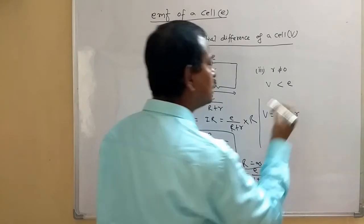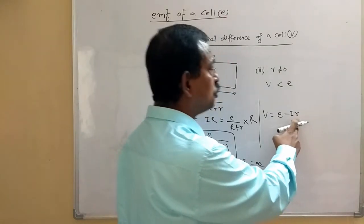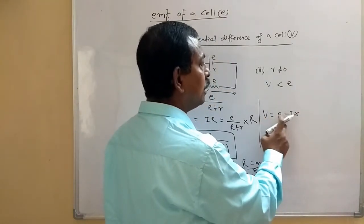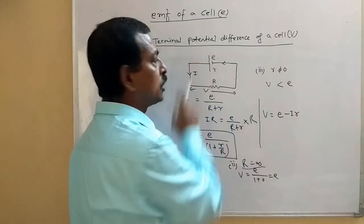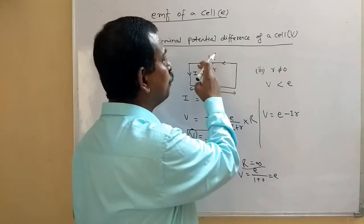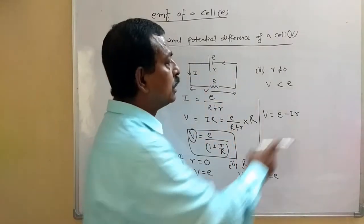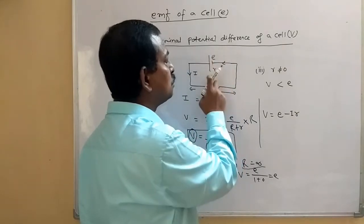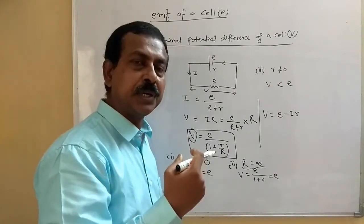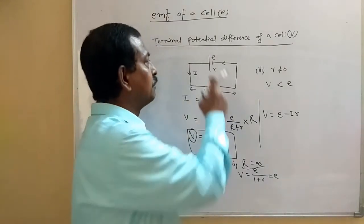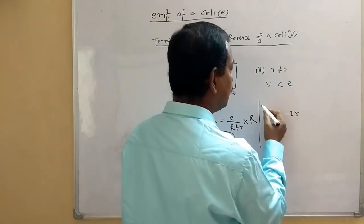Why do we write V equals E minus I·r? Because when considering the potential difference and moving in the direction of current, the potential drop across the internal resistance is negative. Moving from the negative to the positive terminal of the cell gives a positive rise. So V equals E minus I·r, meaning V is less than E in the normal discharging case.